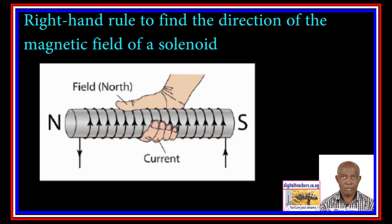The right-hand rule can be used to find the direction of the magnetic field. Point the wrapped fingers along the coil in the direction of the conventional current. Then the thumb will point in the north direction of the magnetic field within the solenoid, as shown below.